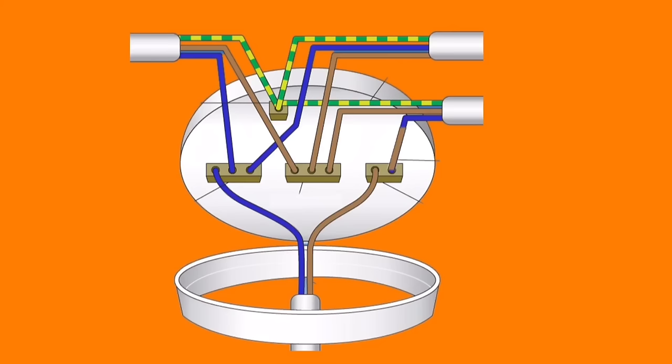The far left hand side has a block of three, which is identified with an N and that's for neutral within the ceiling rose itself. The centre block of three is identified with the word loop and has the permanent line connections coming in and out of it.